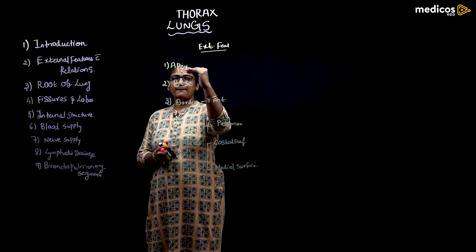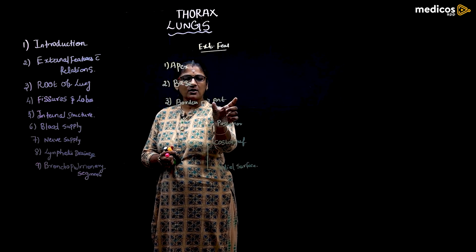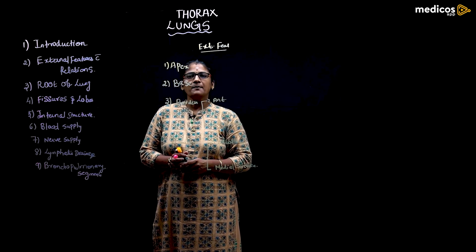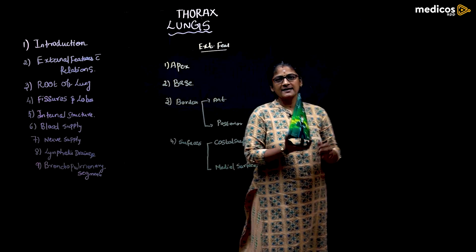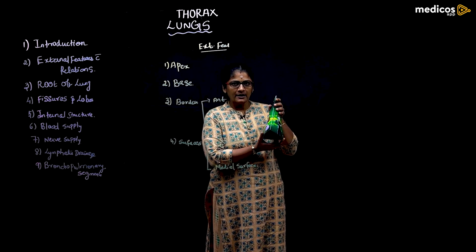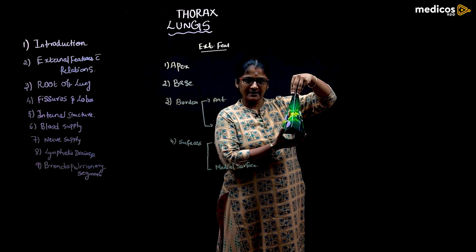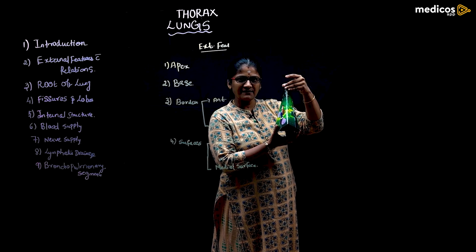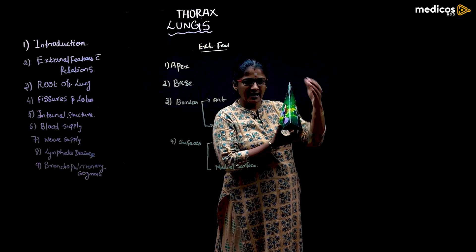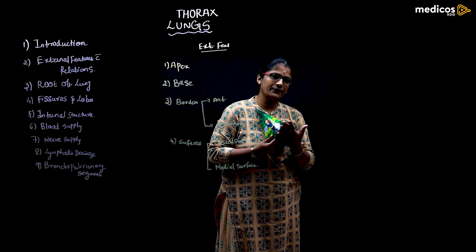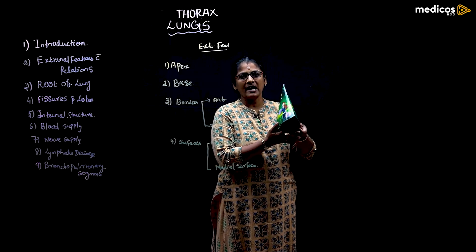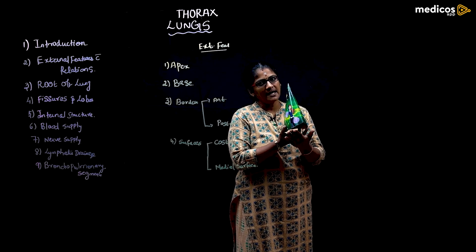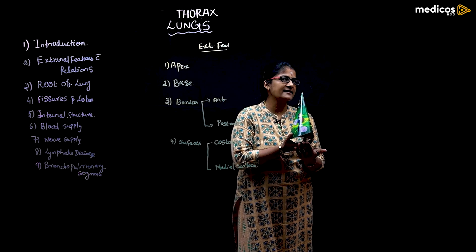The lung is pyramidal in shape. It has an apex pointing upwards and a base below. The base is also called the diaphragmatic surface. The anterior border is sharp and the posterior border is rounded. The costal surface is laterally situated and convex, while the medial surface lies between the anterior and posterior borders on the medial side.